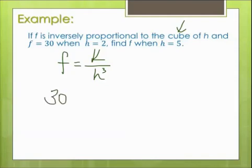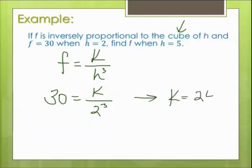Alright, so step two, find k. f is 30, don't know what k is, and h is 2, but I need to cube it. So let's solve for k. 2 cubed is 8, so I'm going to multiply both sides by 8. So that means k equals 240.